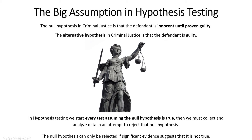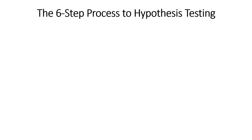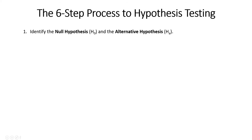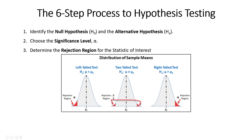As we walk through the process, we'll talk about how you know when you can successfully reject the null hypothesis. The six-step process to hypothesis testing: step one, most importantly, is to identify the null and alternative hypothesis. If we don't get this correctly, it changes the entire hypothesis test and might throw off your result. Step two is choosing the significance level. Once you have your null and alternative hypothesis, you need to determine a significance level because that's important for step three: determining the rejection region for whatever statistic we're measuring.